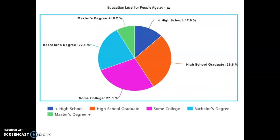The second chart is the exact same data, just made using a different website. Again, it has a title — that title could probably be a little bigger. This one also has a key, and this one shows percents instead of decimals for each slice, but it still looks the same. The colors are different, but the largest slice of pie is the orange slice representing high school graduates.